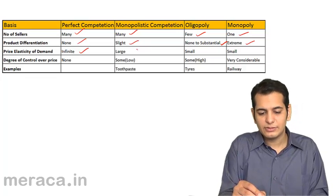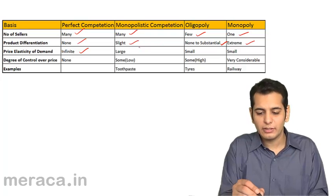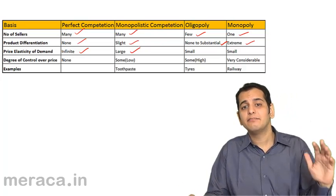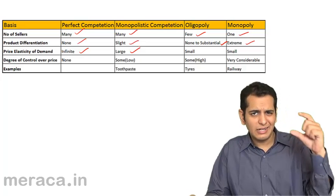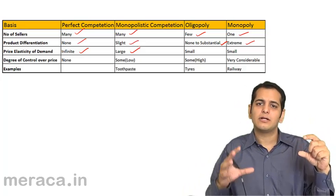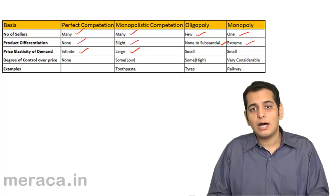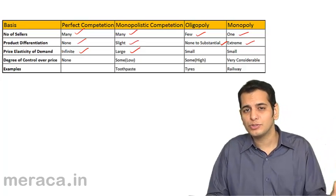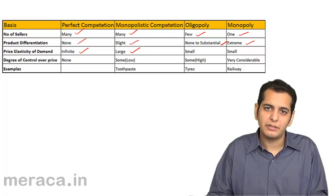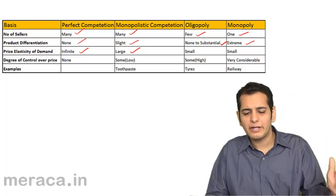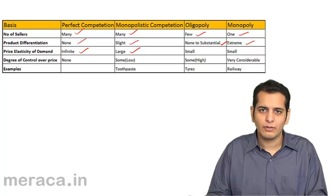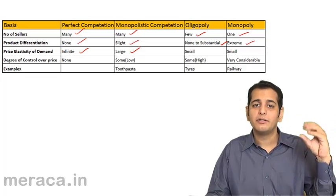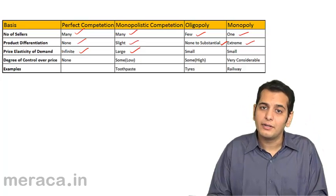Price elasticity of demand in monopolistic competition is large — it is relatively elastic. A slight change in price brings about a larger, more than proportionate change in quantity demanded, because there is a slight product differentiation. So if you change the price, the quantity demanded will change in a higher proportion.